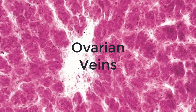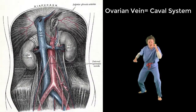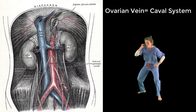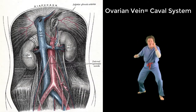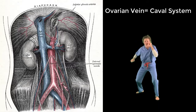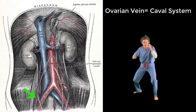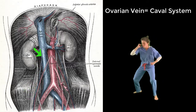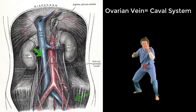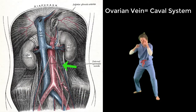Ovarian veins drain into the inferior vena cava. Remember that the right one does so directly, while the left one does so via the left renal vein.